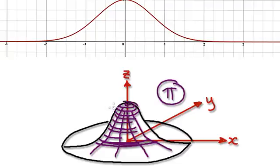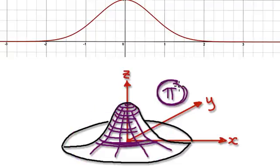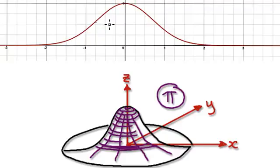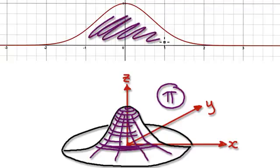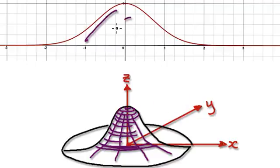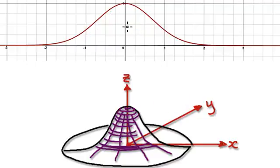We've seen this many times — the volume of this thing here is given by pi. Now, we are still trying to find out this area here underneath the graph. Let's just say this area here is capital Q.